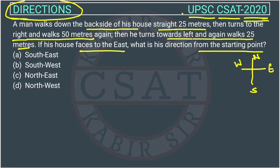Now we will start. This is a house, and it is facing east, as mentioned in the question. Since the house faces east, the backside is to the west. So the man started from the backside and walked straight 25 meters going west.